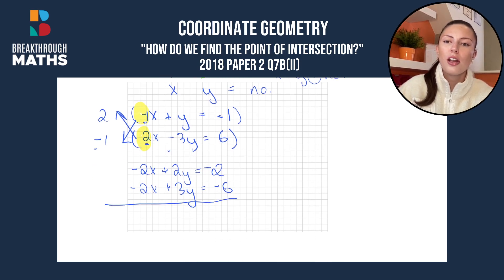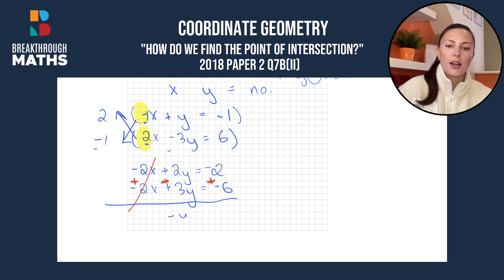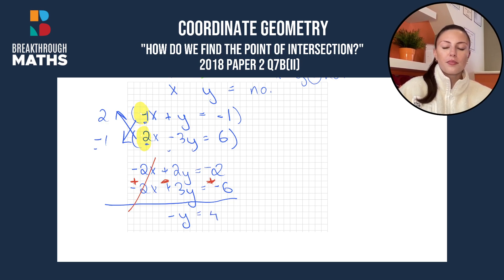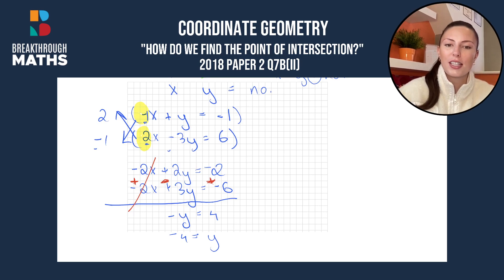Our next step is to draw the line and change the signs. So this changes to a plus, this becomes a minus, and this becomes a plus. The -2x and +2x cancel out. Then 2y - 3y gives us -y, and -2 + 6 equals 4. So we have -y = 4, which we switch around — y is equal to -4.